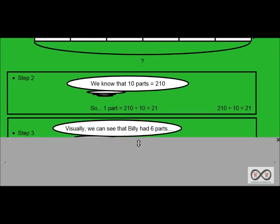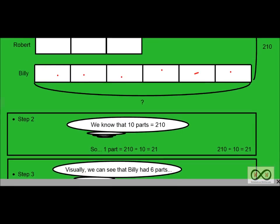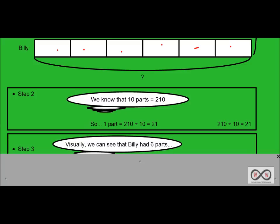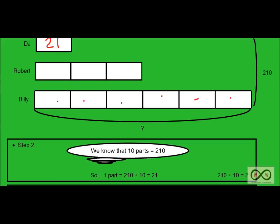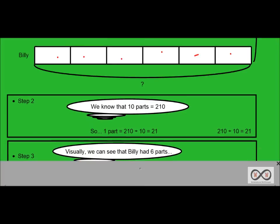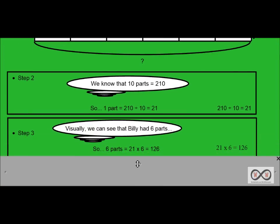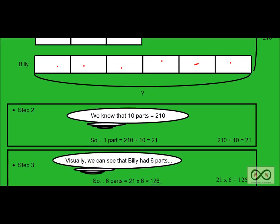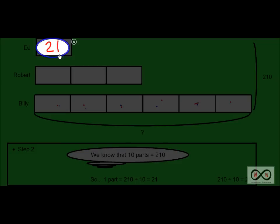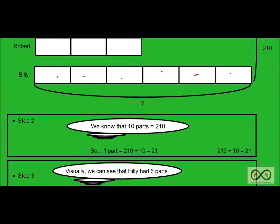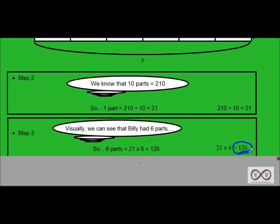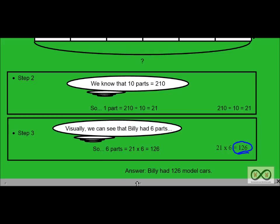We can move on to step three. Visually you can see that Billy had six parts. Since DJ had 21 and one part equals 21 model cars, Billy had six times that amount. You're probably thinking six parts equals 21 times six equaling 126. If you were thinking that, good for you. Exactly. Billy had six equal parts. Six times 21 because you can see that each part is worth 21. So 21 times six naturally would be the solution. 126.